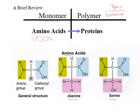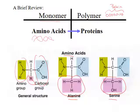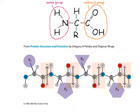Here's an example of two amino acids: alanine and serine. Keep in mind, amino acids only differ because of the R group. They all have the amino group and the carboxyl group, but it's the R group that makes each amino acid slightly different. When we link a whole bunch of amino acids together, we get the polymer known as proteins.